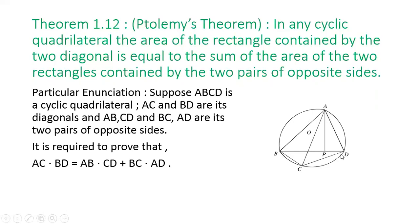AB and CD are one pair of opposite sides, and AD and BC are the other pair of opposite sides. It is required to prove that AC · BD = AB · CD + BC · AD.